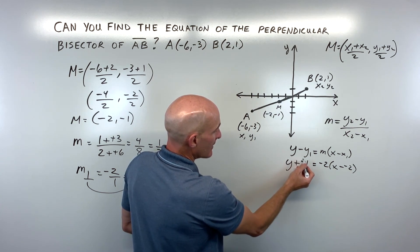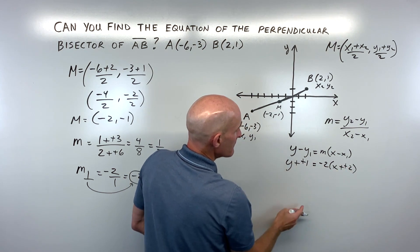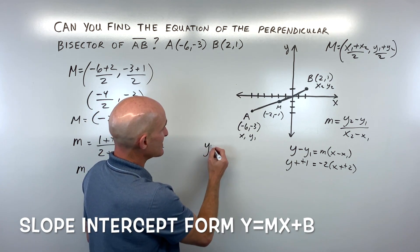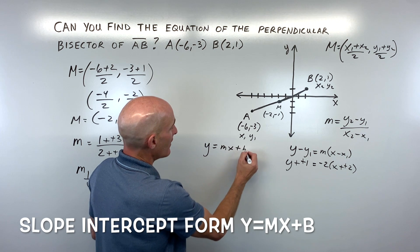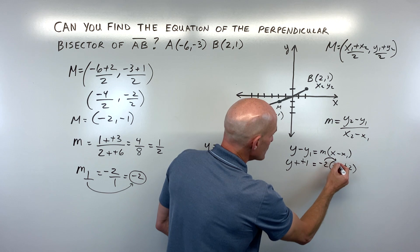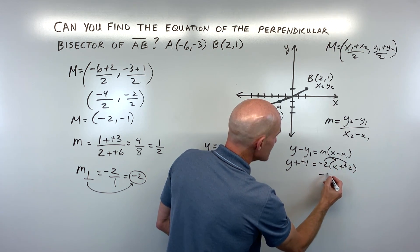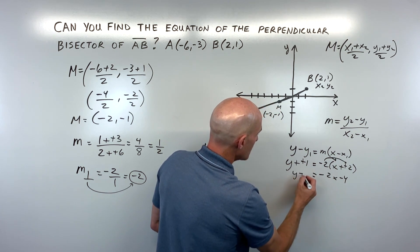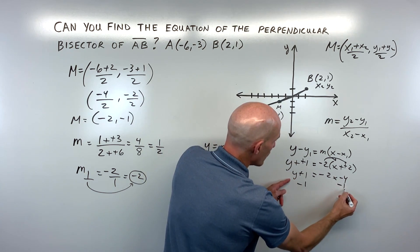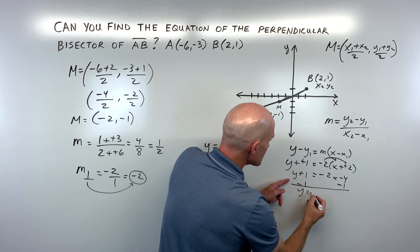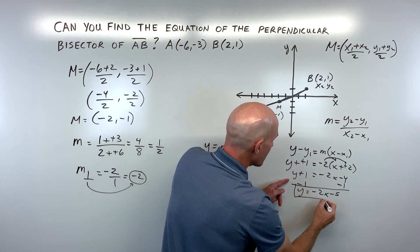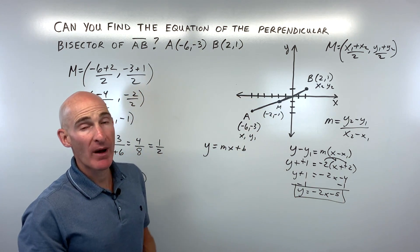And then what we can do is we can rewrite it into the slope-intercept form of the equation of a line. That's the y equals mx plus b form by solving for y. So what I'm going to do is I'm going to distribute the negative 2 into the parentheses, and then I'm going to get y by itself by doing the opposite. I'm going to subtract 1 from both sides. And so that gives us y is equal to negative 2x minus 5, and that's the equation of your perpendicular bisector.